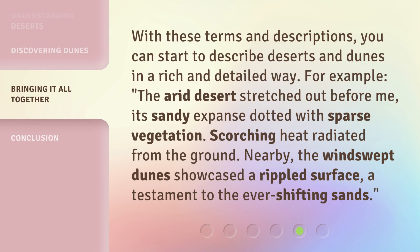With these terms and descriptions, you can start to describe deserts and dunes in a rich and detailed way. For example: 'The arid desert stretched out before me, its sandy expanse dotted with sparse vegetation. Scorching heat radiated from the ground. Nearby, the windswept dunes showcased a rippled surface, a testament to the ever-shifting sands.'